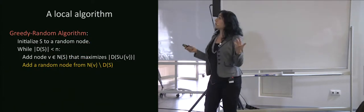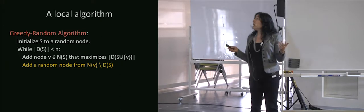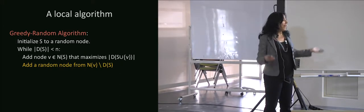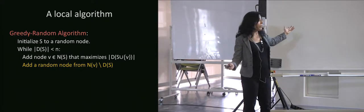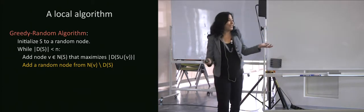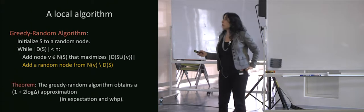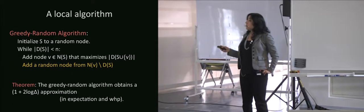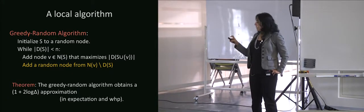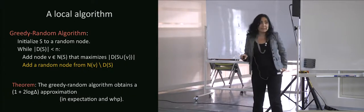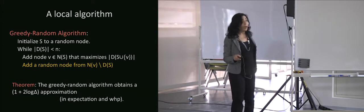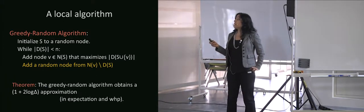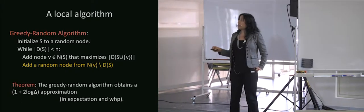How about a greedy-random algorithm? Sometimes do a greedy step, and sometimes add a random node. It turns out greedy-random is really good — it obtains a (1 + constant · log δ) approximation in expectation and with high probability. One-local information is enough for a greedy-random algorithm: you're greedy on the one-local part and do a random step every now and then.